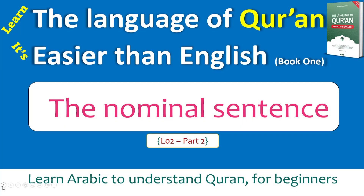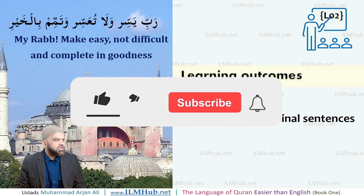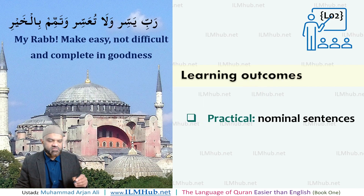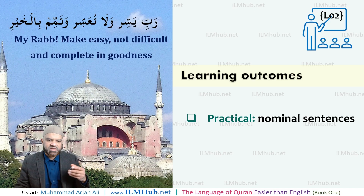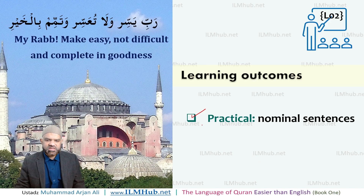Assalamu alaikum. Welcome to the Language of Qur'an, easier than English. Lesson two, part two. In lesson one, we looked at an overview of the four properties of an ism and also took a closer look at Iqraab. In this lesson part one video, we've already seen the property of definiteness, and you should now be familiar with the seven categories of ism that are definite.